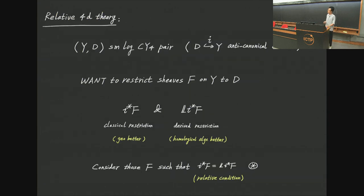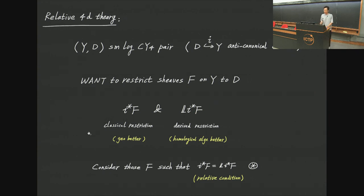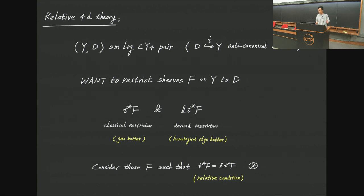The equivariant vanishing cycle sheaf homology fits into homological DT theories, relevant to geometric representation theory. Now let us talk about the relative 4D theories where our four-folds come in. We start with Y_D, a smooth log Calabi-Yau four-pair, where Y is a smooth four-fold and D is a smooth anti-canonical divisor, so D is a Calabi-Yau three-fold by adjunction. For the relative theory we want to restrict sheaves from Y to D, and there are two kinds of restriction maps: a classical restriction and a derived restriction using a resolution by locally free bundles.